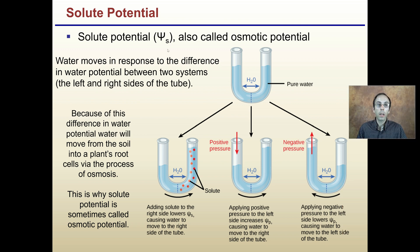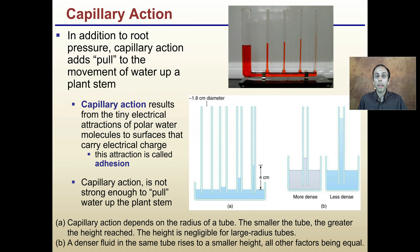There's also the solute potential, represented by this symbol here. The solute potential is called the osmotic potential. Water moves in response to the difference in water potential between two systems, the left and right sides of the tube. In a perfectly balanced system, we see the water at the same height on the left and the right. Because there is a difference in water potential, water will move from the soil to the plant's root cells via osmosis. We see here we have some solutes; water is naturally going to move towards those sides. We want to try to dilute those solutes through this semipermeable membrane. By adding solutes to the semipermeable membrane, the osmotic flow of that water is going to shift to one side.